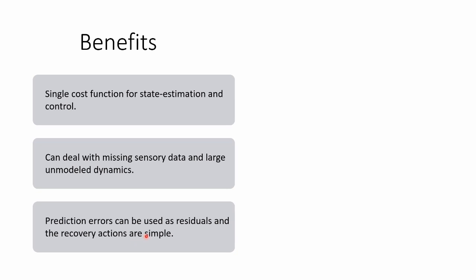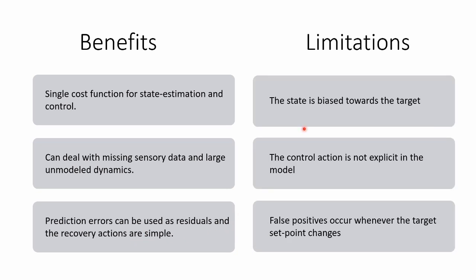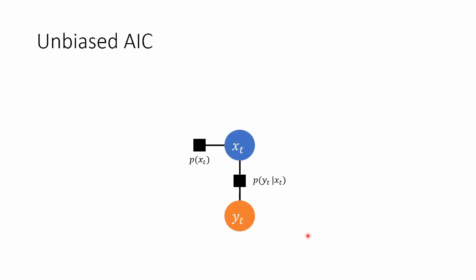However, it has also key limitations. The state is biased towards the target, often a lot. The control action is not explicitly modeled. And most importantly, there are a lot of false positives whenever the set point changes.